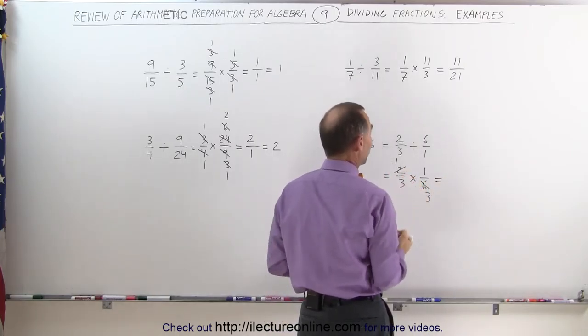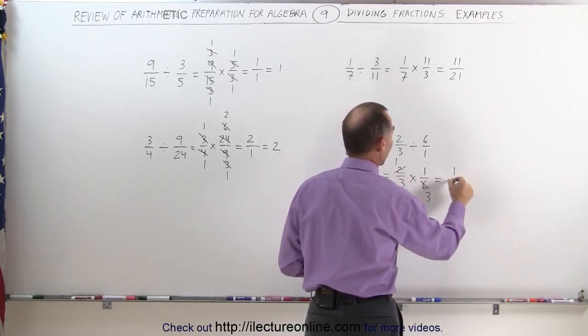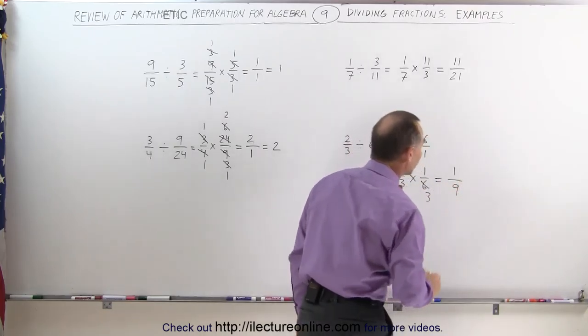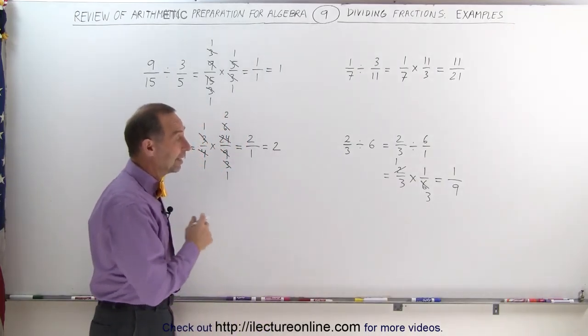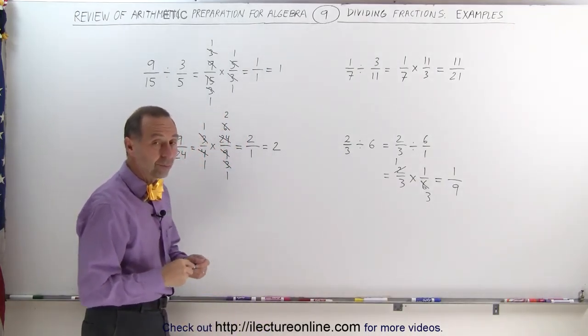Now you work out the multiplication: 1 times 1 is equal to 1, and 3 times 3 is equal to 9. The answer is 1/9. 2/3 divided by 6, therefore, is equal to 1/9.